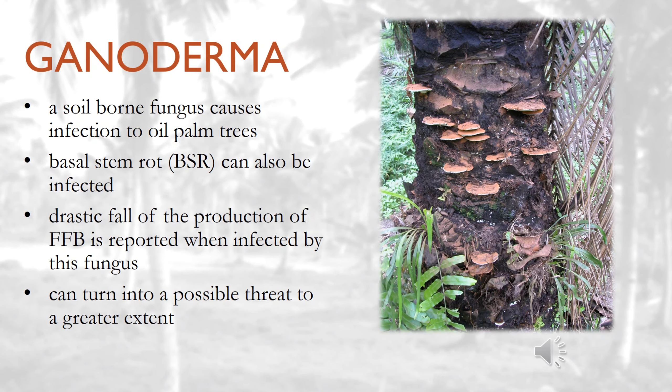Ganoderma, a soil-borne fungus, is an increasing concern for those who operate plantations in Malaysia as it causes infection to oil palm trees. Ganoderma is a wood-decaying fungus which can affect oil palm. A disease called basal stem rot can also be caused by this Ganoderma. A drastic fall in production of FFB is reported when infected by this fungus, along with wilting and extreme dryness of leaves of the palm tree.